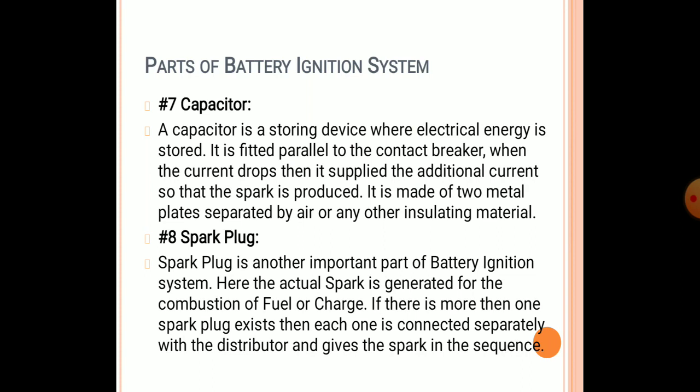The capacitor and the spark plug are the final parts of the battery ignition system. The capacitor is a storage device where electrical energy is stored; it is fitted in parallel to the contact breaker, and when the current drops, it supplies additional current so the spark plug produces a spark. It is made up of two metallic parts separated by air or any other insulating material. The spark plug is another important part where the actual spark is generated for the combustion of fuel.